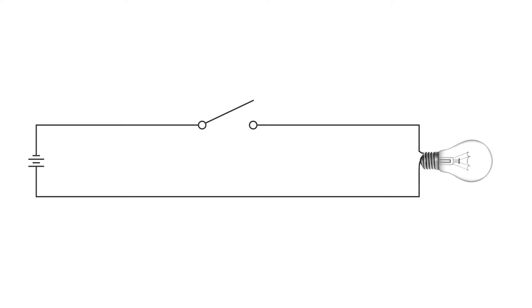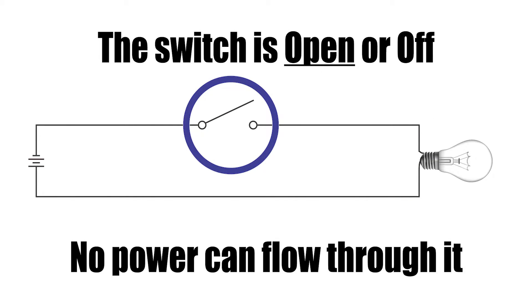The first one is a simple circuit where I have a battery power source that's going to go through a switch to a light bulb, but the switch is open, meaning no power can flow through it. Therefore, the light bulb is off.